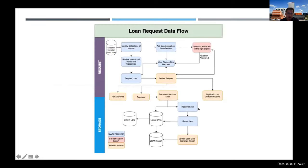An example workflow for a loan request: you identify an item from the collection object, review the policy, ask questions that might be routed to an expert within or outside the institute, and then request a loan. The institution's request handler approves the request and the items get sent out. Three different roles are identified — requester, institution expert, and request handler — all dealing with collections data in different ways and needing description and collection items from a catalog.